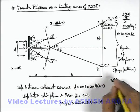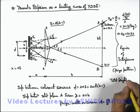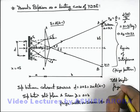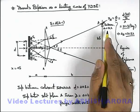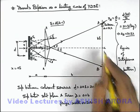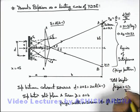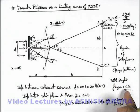So here we can directly write total bright fringes will be equal to 21 + 21 = 42, plus 1 this will be 43. In between these 43 fringes there will be 42 dark fringes.